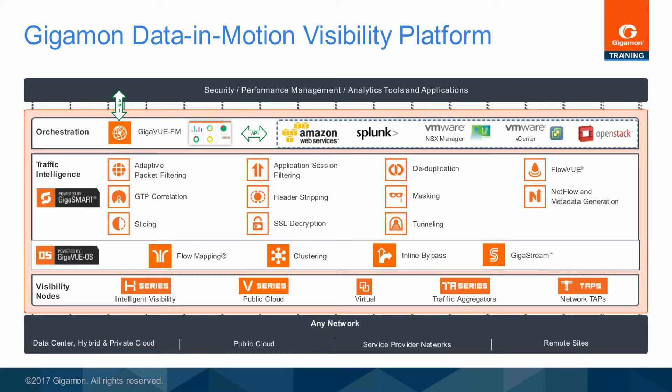The Gigamon Data in Motion Visibility Platforms provide pervasive visibility across physical, virtual, remote sites and future SDN-NFV production networks. Development is always busy with new modules and technologies to address present and future needs as your network grows and evolves. The Gigaview HC Series Nodes are the most flexible visibility platform nodes in the hardware suite, offering internal taps, various port modules, the Gigasmart Feature Suite and even inline bypass.